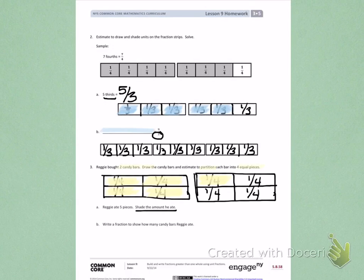Letter B. Write a fraction to show how many candy bars Reggie ate. On your own, write a fraction to show what Reggie ate. Think about what needs to be the total number on the top that he ate, and what each candy bar is partitioned into as your denominator.